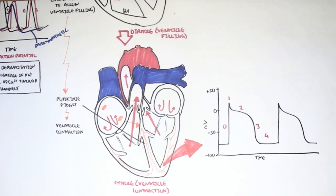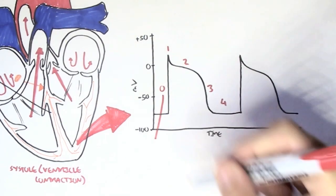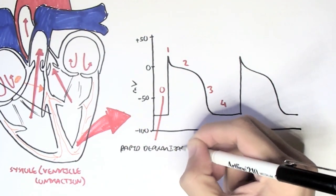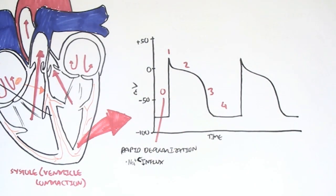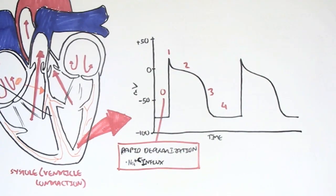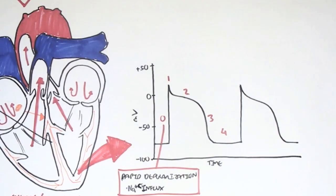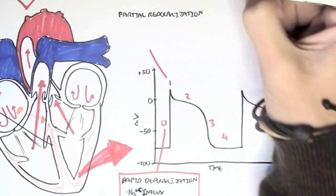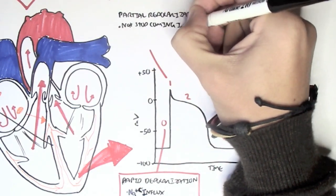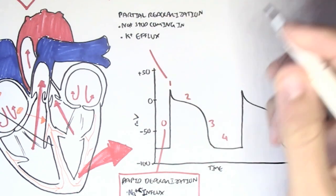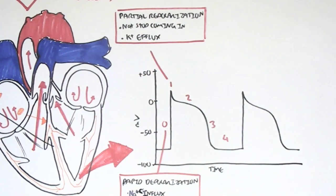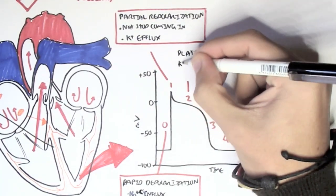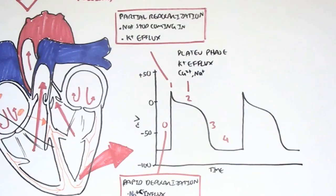Let's look at all these phases. Phase 0 is rapid depolarization — the membrane potential becoming more positive by the rapid influx of sodium ions. This is the contraction of the ventricles. Then at phase 1, we have a partial repolarization, when the membrane potential partially becomes more negative. This is when the sodium ions stop moving in and the potassium ions move out — potassium efflux. Then phase 2 is the famous plateau phase, when potassium ions are still moving out but we also have calcium ions moving in, balancing each other out.